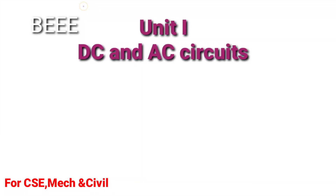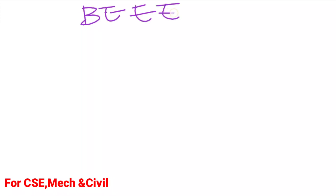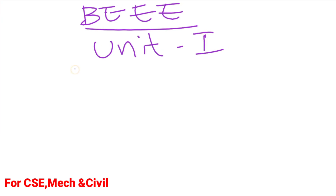Hello students, today we are going to discuss the new subject Basic Electrical and Electronics Engineering for Computer Science engineering students, Civil engineering students, and Mechanical engineering students. That is Unit One of Basic Electrical and Electronics Engineering — BEEE Unit One, which covers DC and AC Circuits.